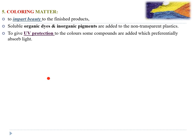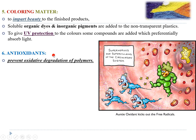Of course we don't just have one colored plastic — we have very beautifully colored plastic as well. For this, coloring matter is required. Its role is to impart beauty. Coloring matter can be dyes or organic pigments. They also give UV protection to some plastics by absorbing light.